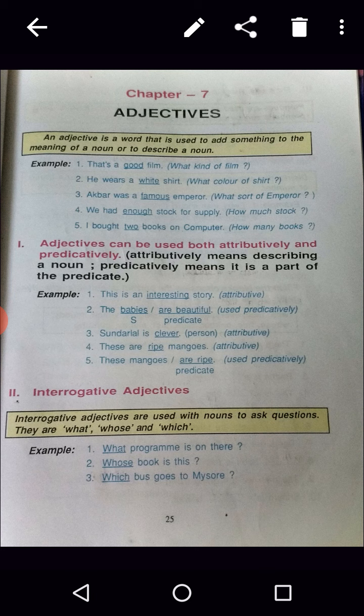Second type: Interrogative adjectives. Interrogative adjectives are used with nouns to ask questions. They are what, who, whose, which. Example: What program is on that? — 'what' is the interrogative adjective. Whose book is this? — 'whose' is interrogative. Which bus goes to Mysore? — 'which' is an interrogative adjective.